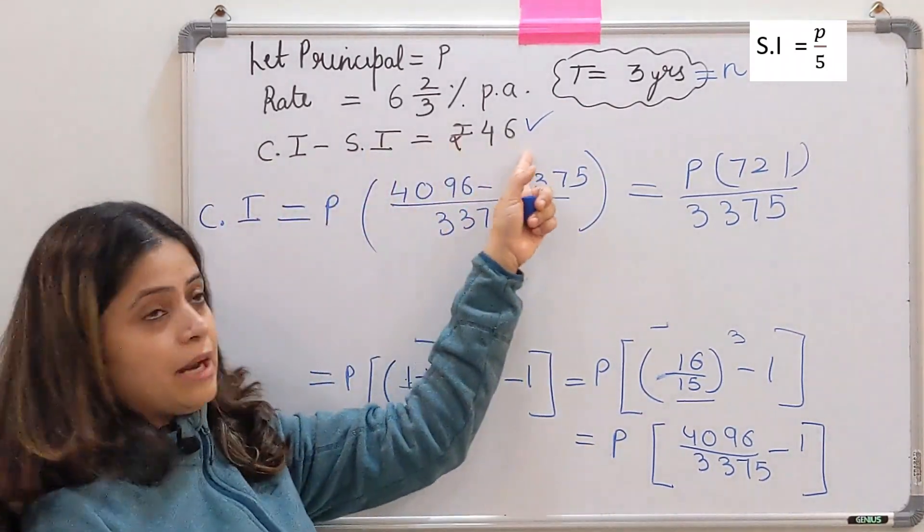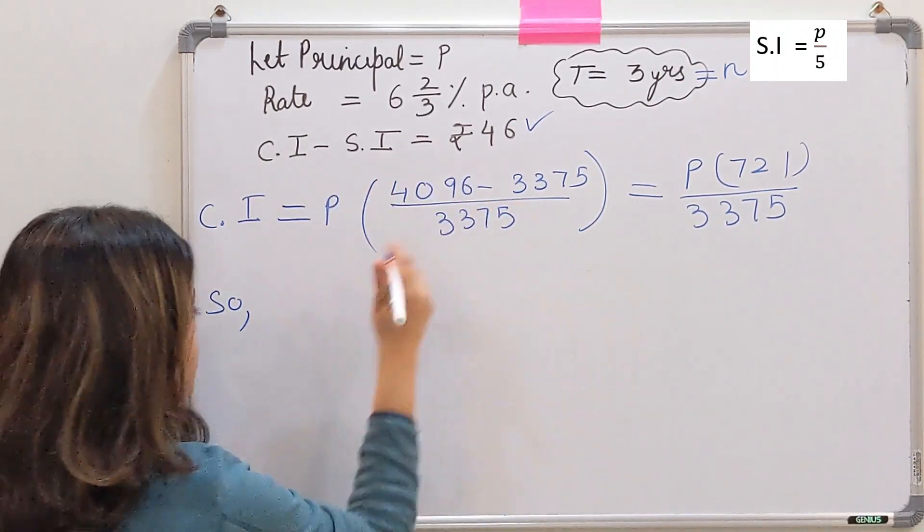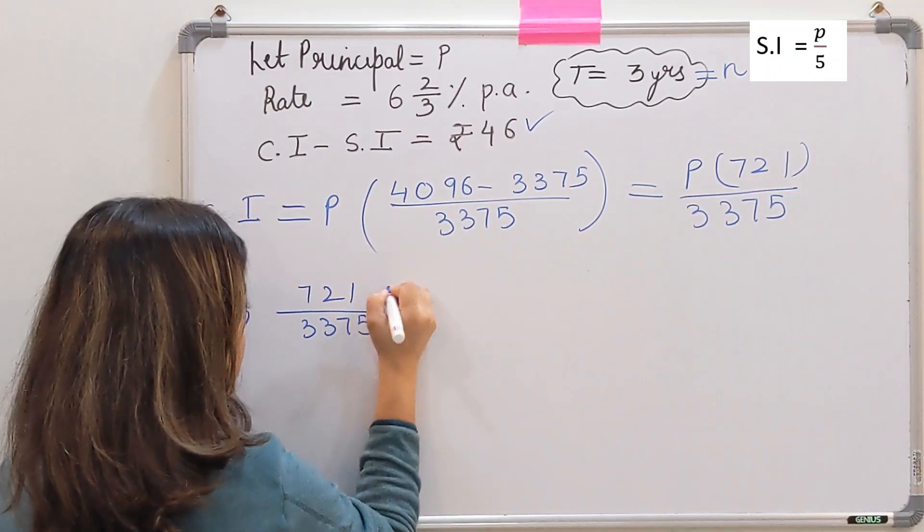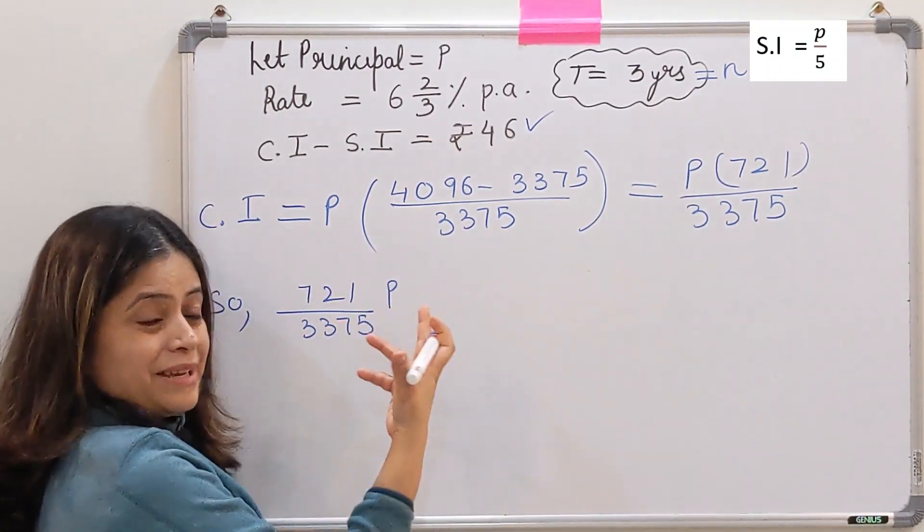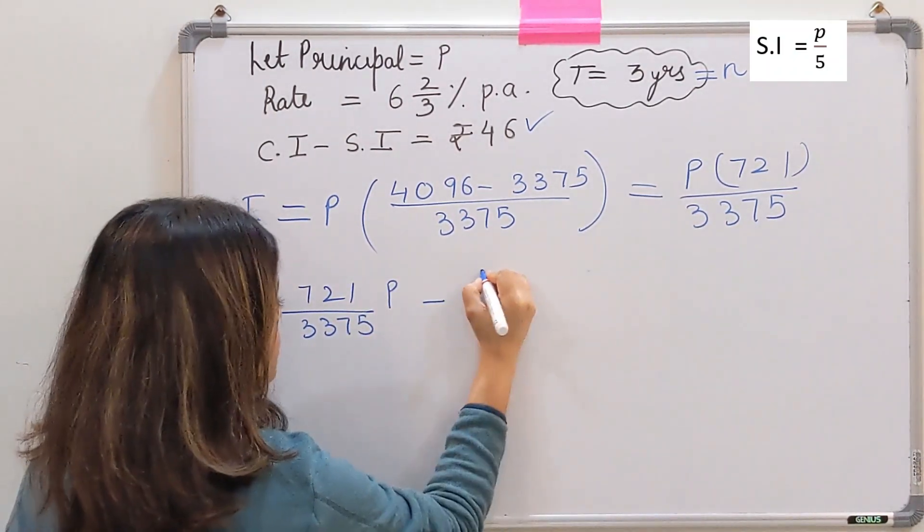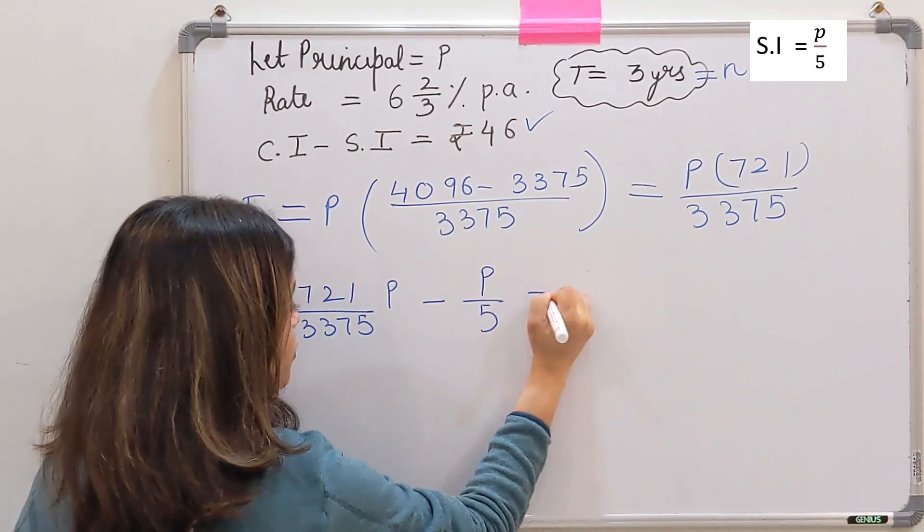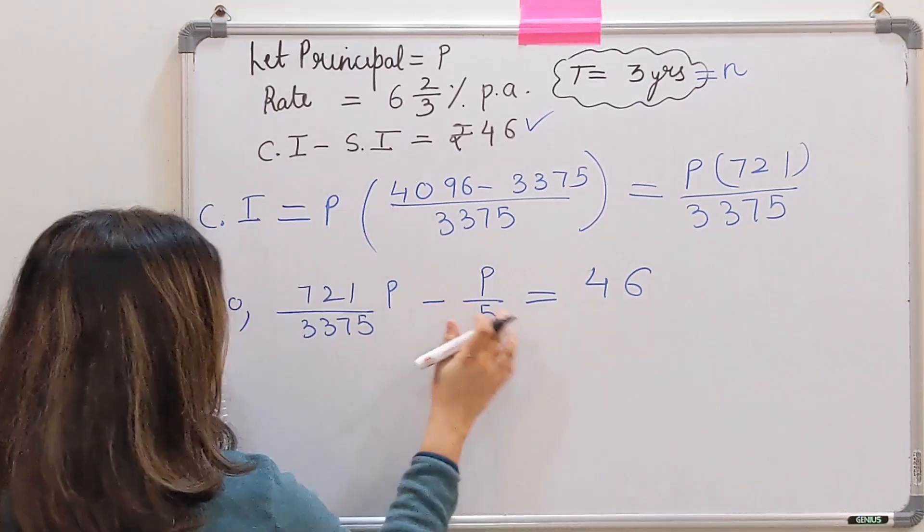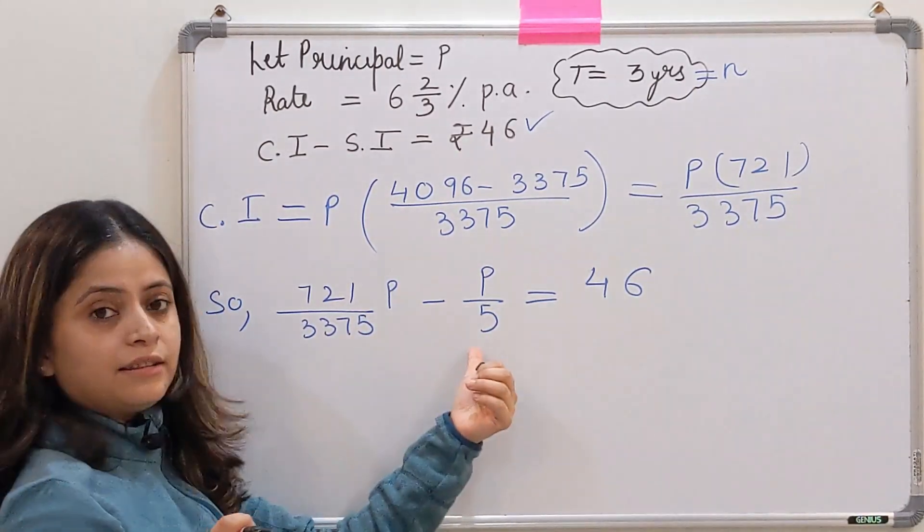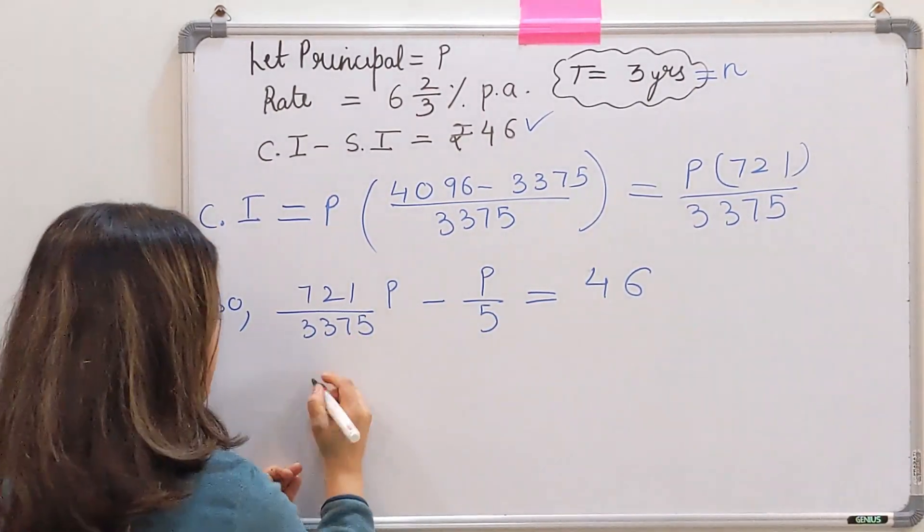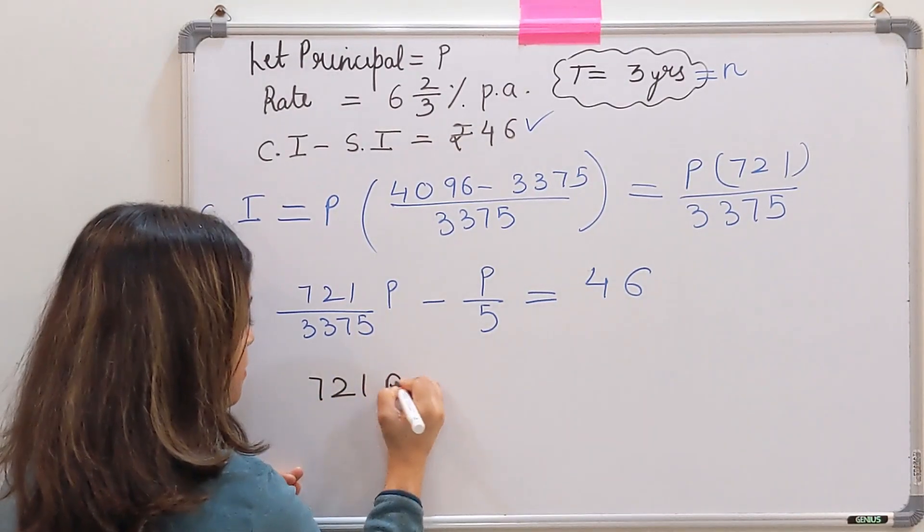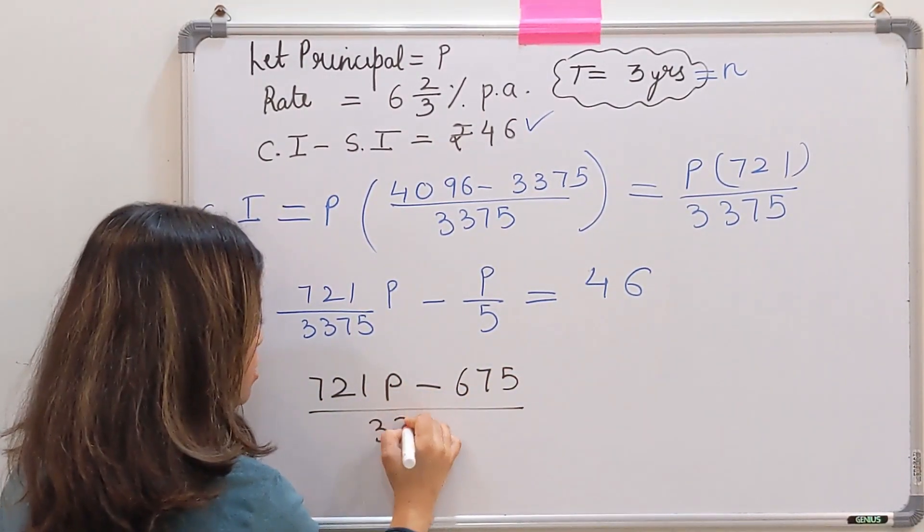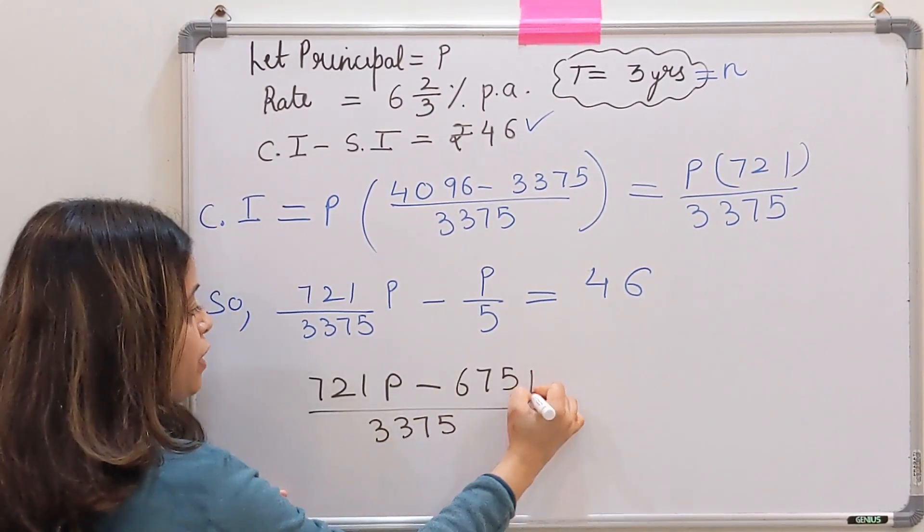So the equation is (721P/3375) - (P/5) = 46. After taking the LCM, which is 3375, we get P/5 = 675P/3375. So the equation becomes (721P - 675P)/3375 = 46, which simplifies to 46P/3375 = 46.